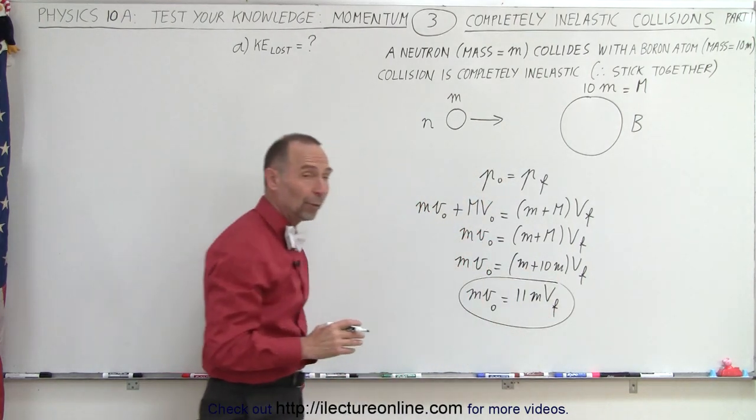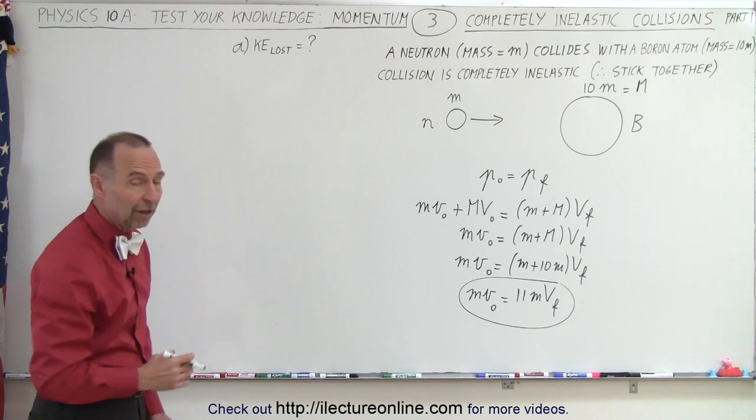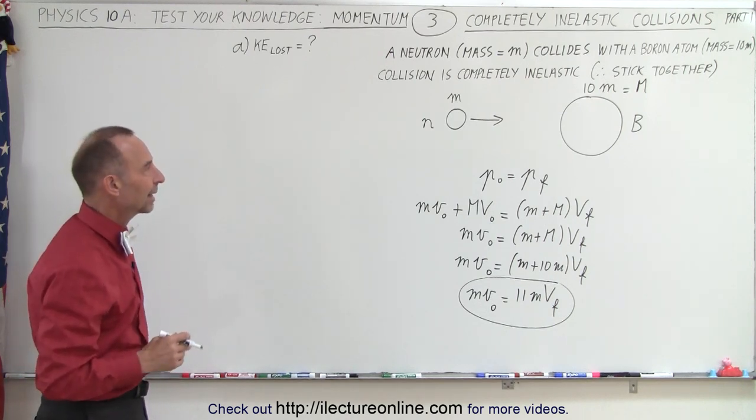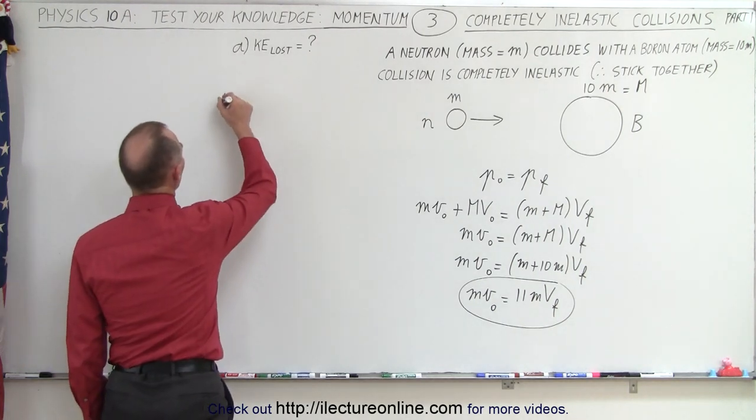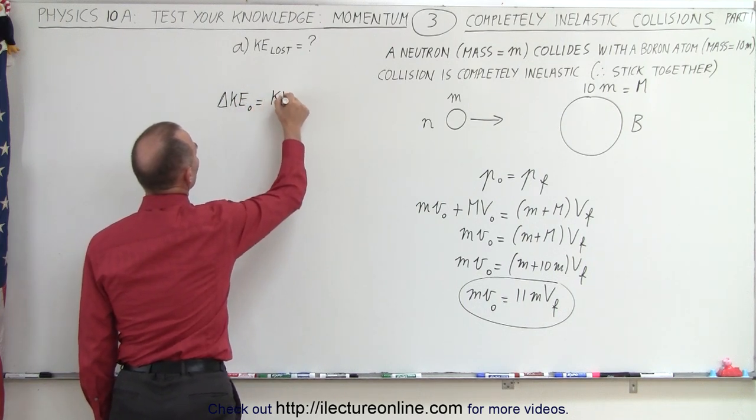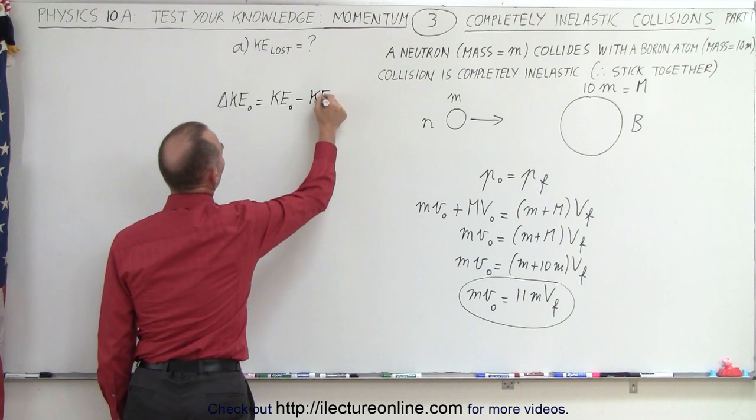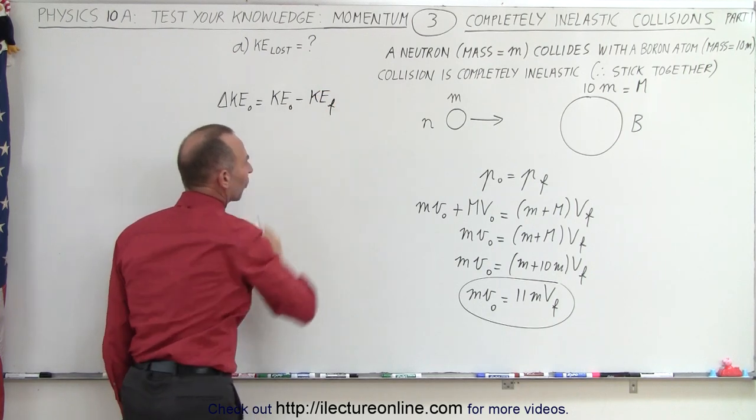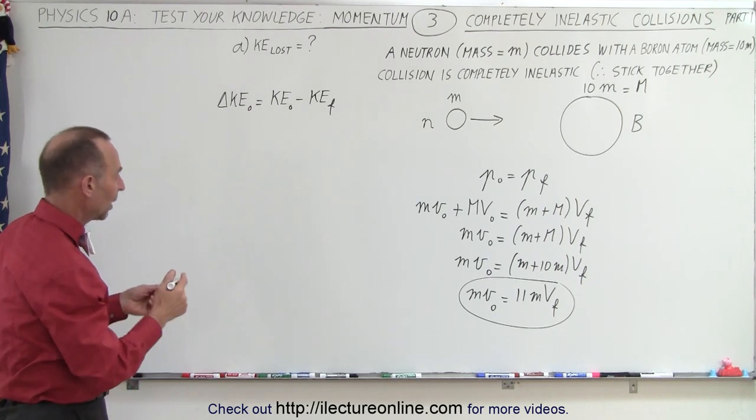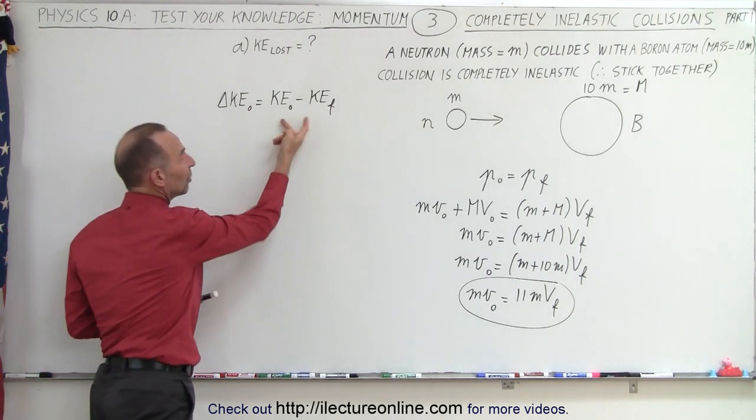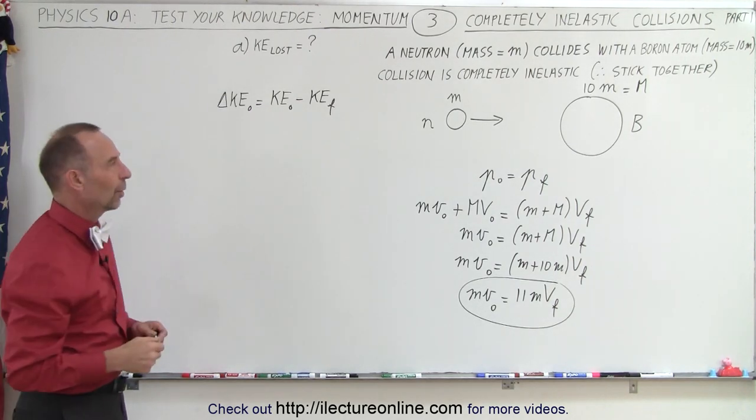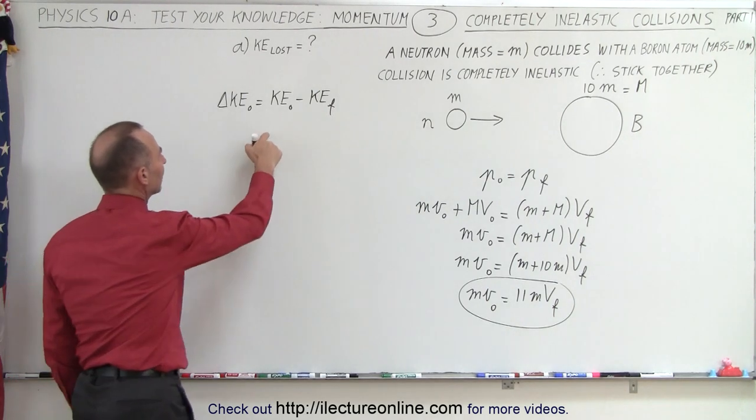Since we don't know what the initial velocity of the neutron was, and we don't know what the final velocity of the neutron and the boron together, we can still find the loss in kinetic energy, because what we can say here is that the loss, or the delta kinetic energy, would be equal to kinetic energy initial minus kinetic energy final. Now, why do we have initial before final? Because we know the initial energy is larger than the final energy, so we end up with a positive quantity, the amount lost. Of course, if we reverse these two, then the change in kinetic energy will be negative, indicating the loss. It depends how you want to look at it. But let's go ahead and calculate that.